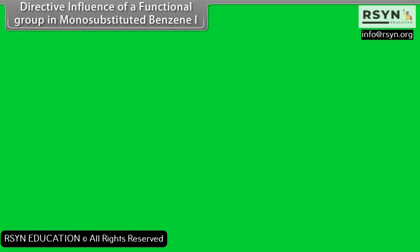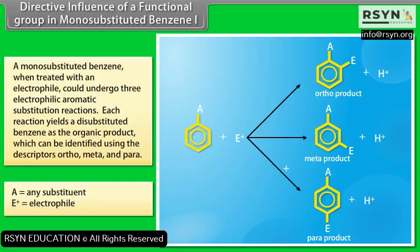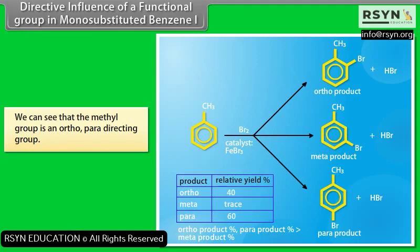Directive influence of a functional group in monosubstituted benzene. A monosubstituted benzene, when treated with an electrophile, could undergo three electrophilic aromatic substitution reactions. Each reaction yields a disubstituted benzene as the organic product, identified using the descriptors ortho, meta, and para. If the relative yield of the ortho and para products are higher than that of the meta product, the substituent is called an ortho-para directing group. If the opposite is observed, the substituent is called a meta directing group. For example, the methyl group is an ortho-para directing group.